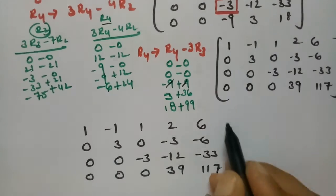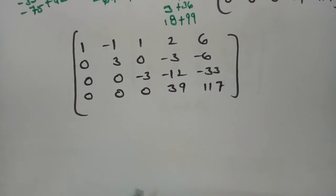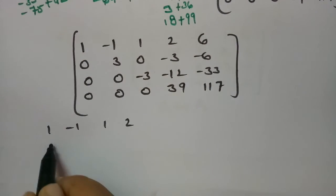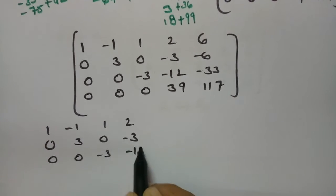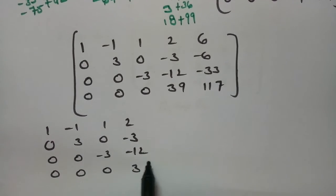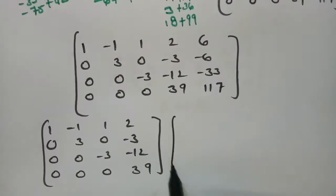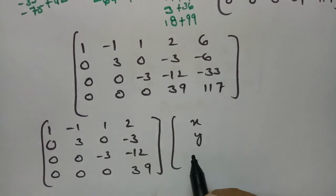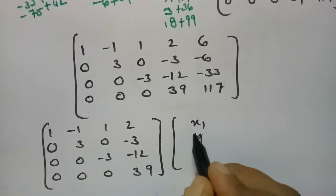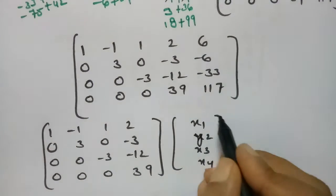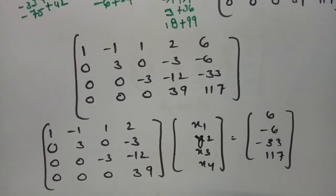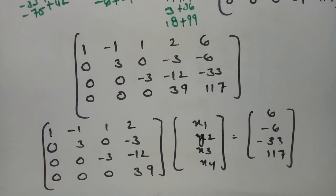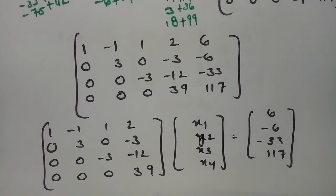After all row operations the upper triangular augmented matrix is: row 1: 1, -1, 1, 2 | 6; row 2: 0, 3, 0, -3 | -6; row 3: 0, 0, -3, -12 | -33; row 4: 0, 0, 0, 39 | 117. We now write the four equations: x1 - x2 + x3 + 2x4 = 6; 3x2 - 3x4 = -6; -3x3 - 12x4 = -33; 39x4 = 117.